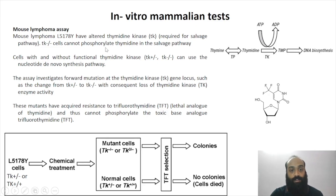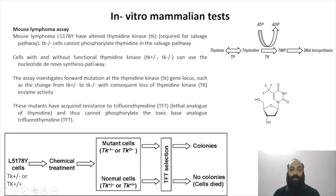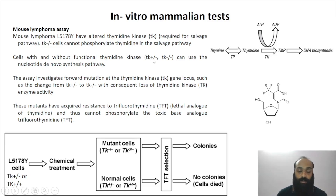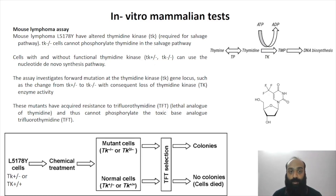Cells with or without functional thymidine kinase — whether TK plus/minus, TK plus/plus, or TK minus/minus — can all use the de novo nucleotide synthesis pathway. Just like in the Ames test, certain chemicals can convert a functional thymidine kinase into a non-functional one, and this assay is used to detect whether a test chemical can cause that conversion.